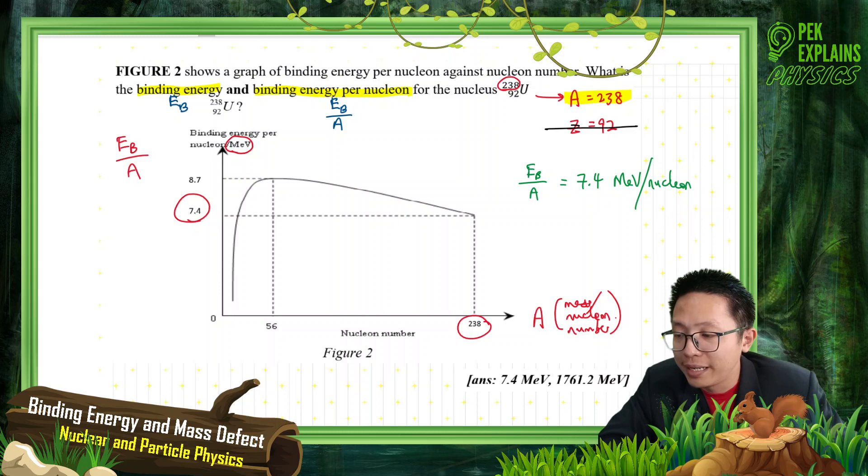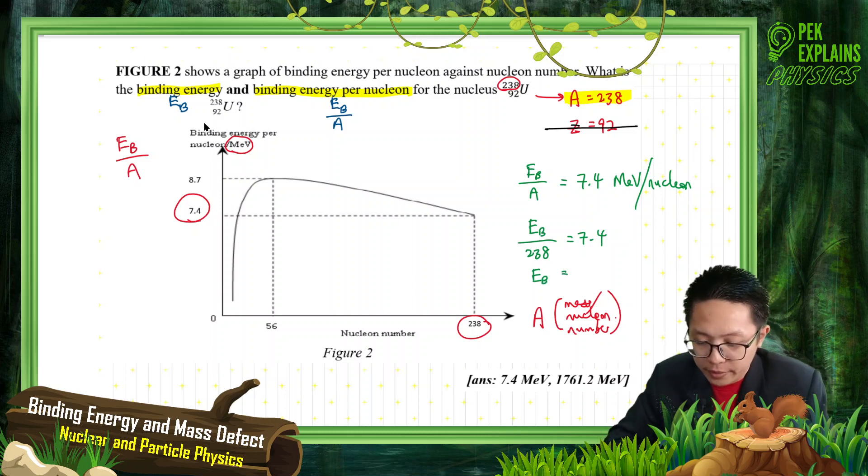Now, how about the binding energy? Binding energy, we must substitute the nucleon number 238 with 7.4. And then what is the answer? So multiply 7.4 multiply 238, so what do I get? I got 1761.2 MeV.